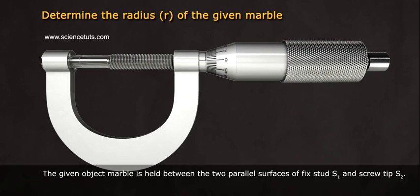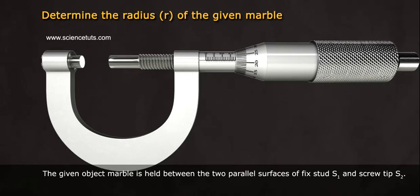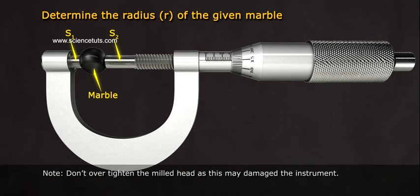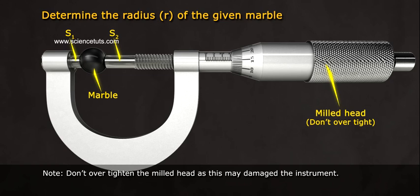The given marble is held between the two parallel surfaces of fixed strut S1 and screw tip S2. Note, don't over tighten the milled head as this may damage the instrument.